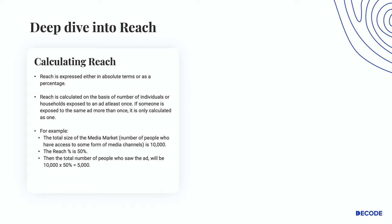Let me show you a quick example to explain this a little better. If the total size of the media market — that is, the number of people who have access to some form of media channels — is 10,000, and the reach is 50%, then the total number of people who saw the ad will be 10,000 × 50%, which equals 5,000.